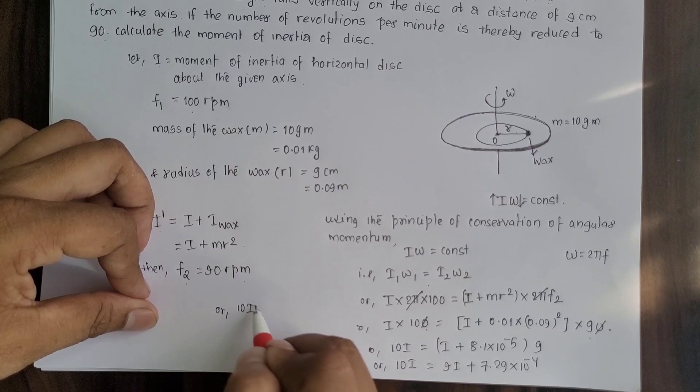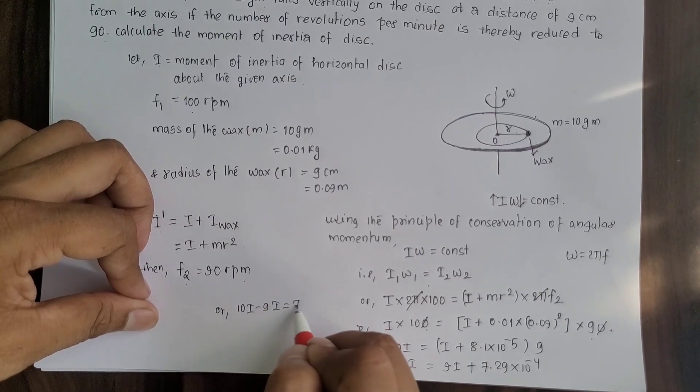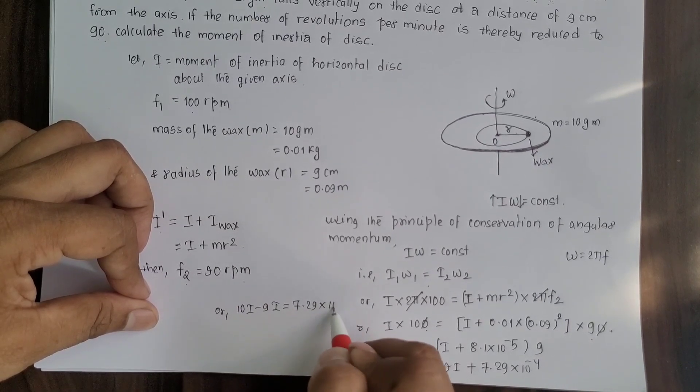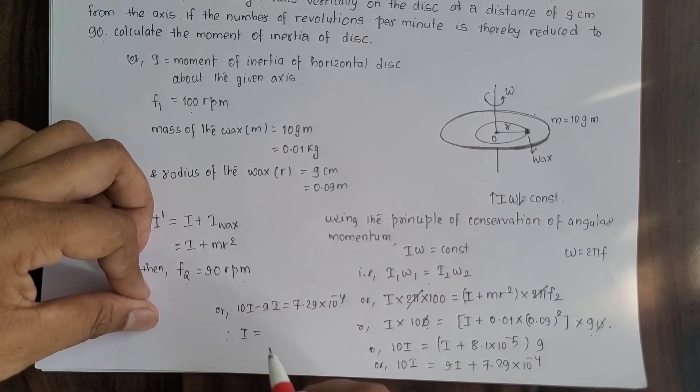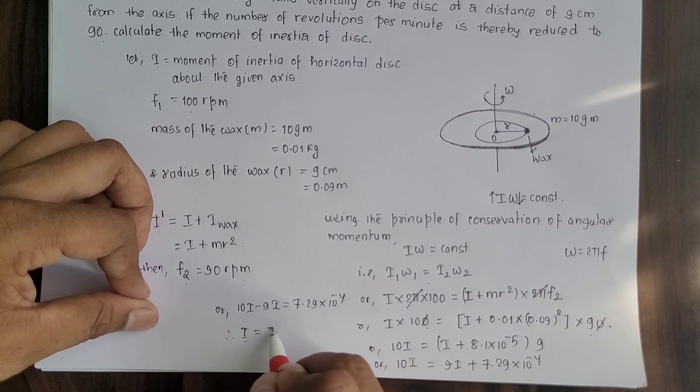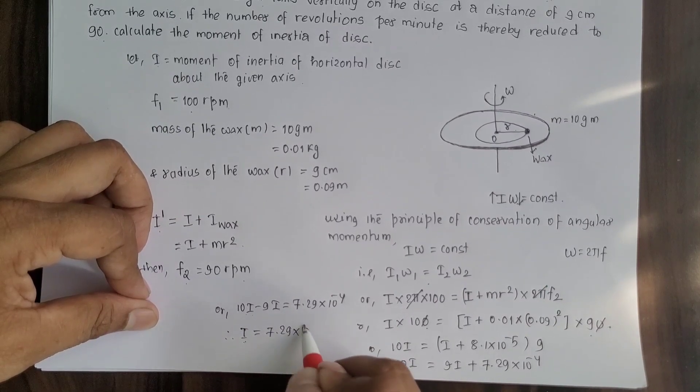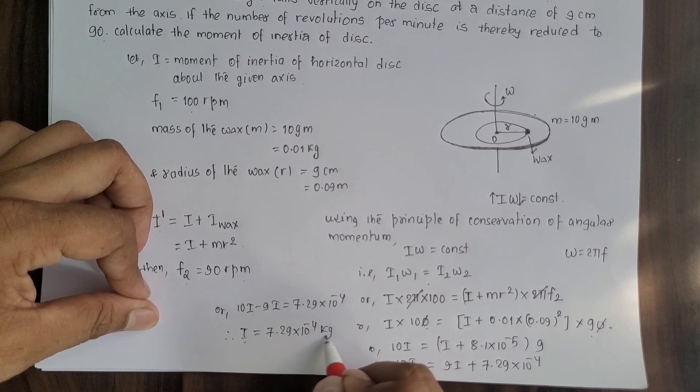10I minus 9I which is equal to 7.29 times 10 to the power minus 4. Therefore, moment of inertia of the disc I equals 7.29 times 10 to the power minus 4 kg meter squared.